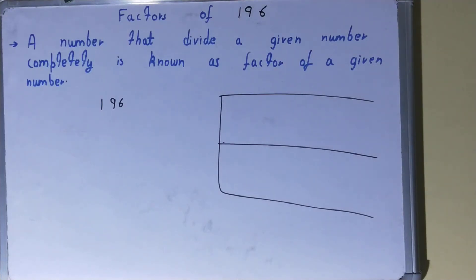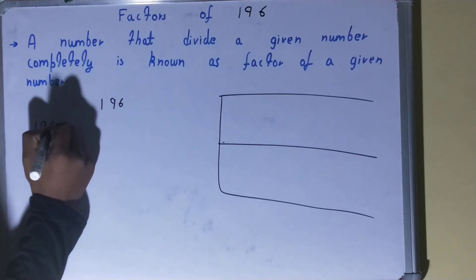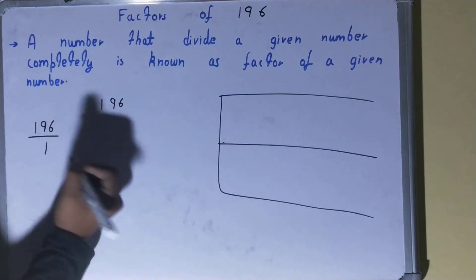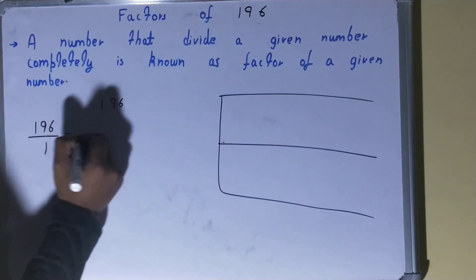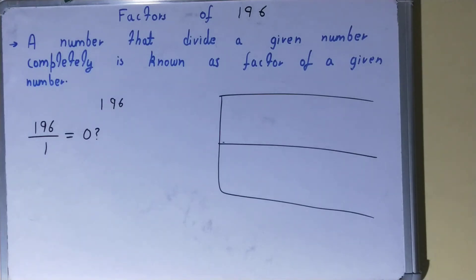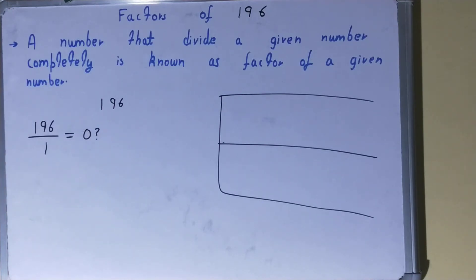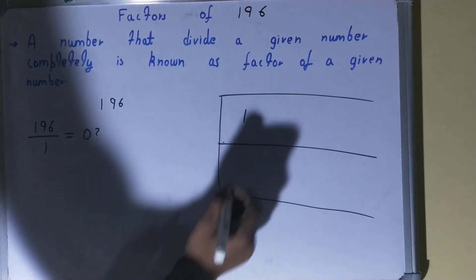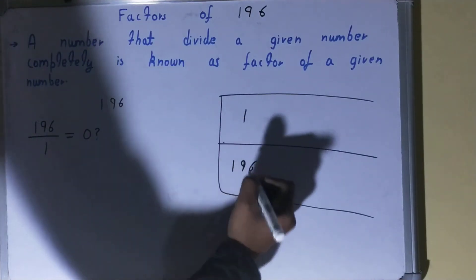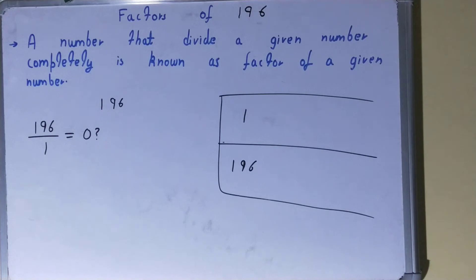Divide 196 by the lowest natural number, which is one. You will get remainder zero, so one is a factor of 196. We write one in the factor list. Using this, we can find another factor: one times 196 equals 196, so 196 is also a factor automatically.